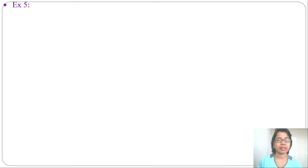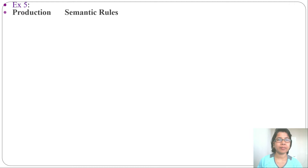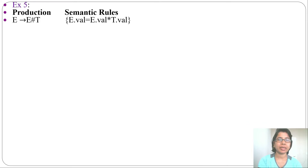Let's discuss Example 5. I already discussed Example 4 — go through the previous lecture. Here some productions with semantic rules are given. First production: E derives E haars T, and the semantic rule is E.value = E.value × T.value.